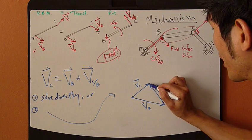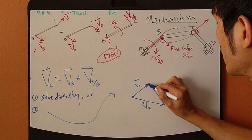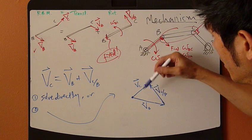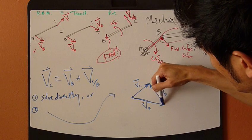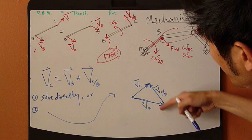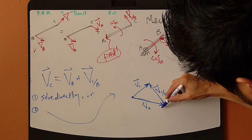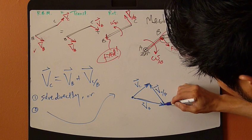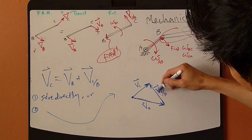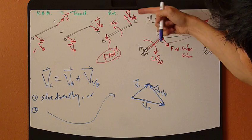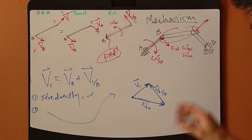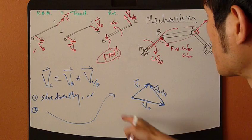Pay attention to the arrow. VC arrowhead goes this way. Then VB going down this way - you must follow this vector right here. Plus, keep going. Head to tail, that's the third vector VC/B.